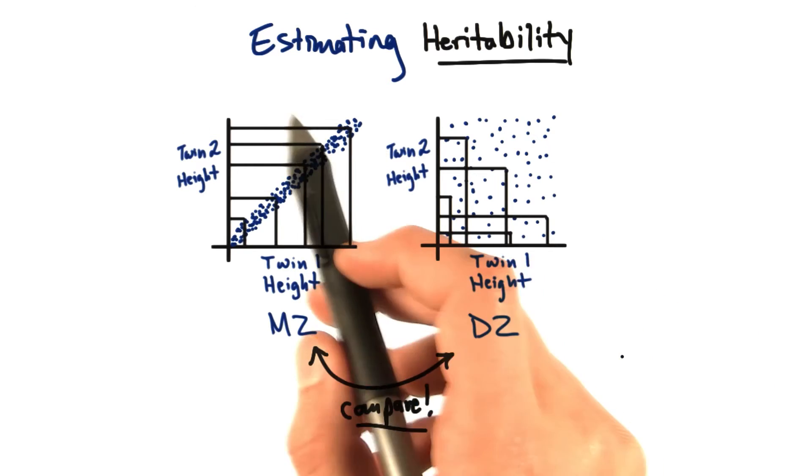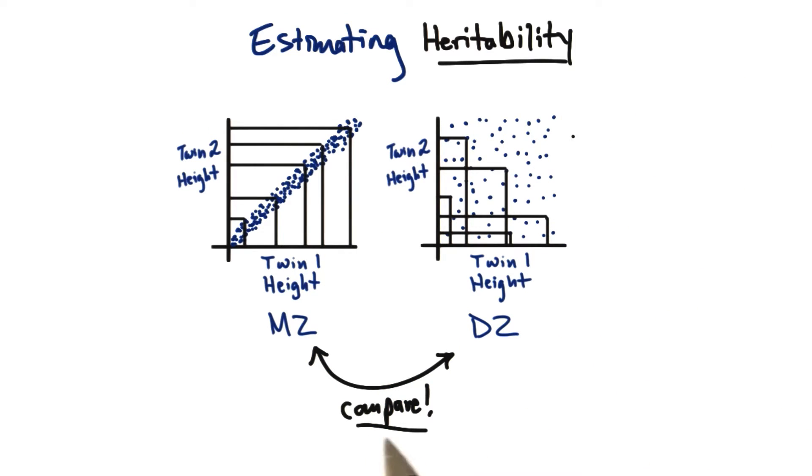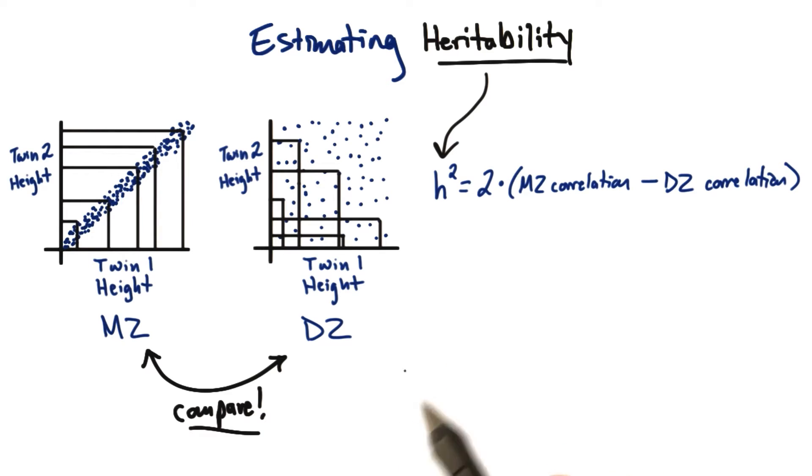One way of actually measuring or estimating heritability is to compare the correlation of a trait between monozygotic twins and dizygotic twins. Now there are multiple equations out there that people use to estimate or calculate heritability, but one of the ones that's relevant to what we've learned so far is using the correlations between monozygotic and dizygotic twins for a trait.